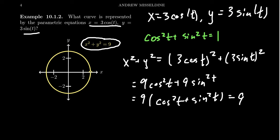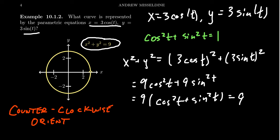One thing to be careful about: as we parameterize the circle here, we end up with a counterclockwise orientation. Now, clocks might seem like a weird thing — back in the day, people told time by a clock, and as the hands spin around in this direction, this is what we call clockwise. Therefore, if the hands were to spin backwards, that would be called counterclockwise.